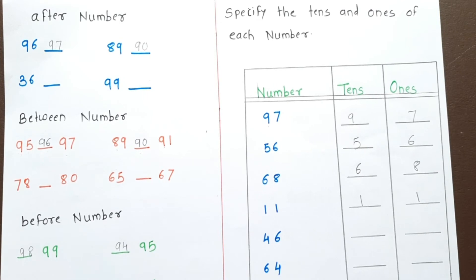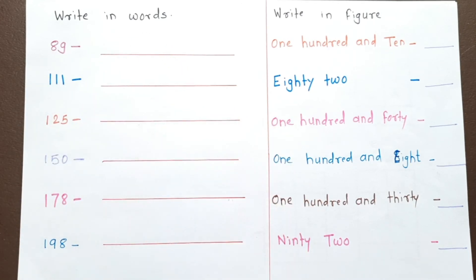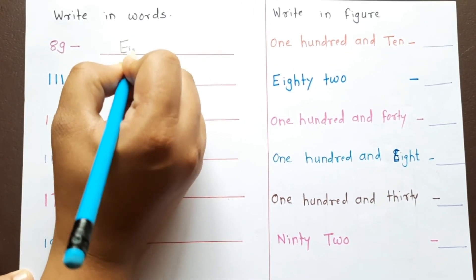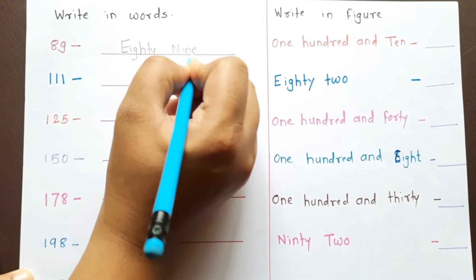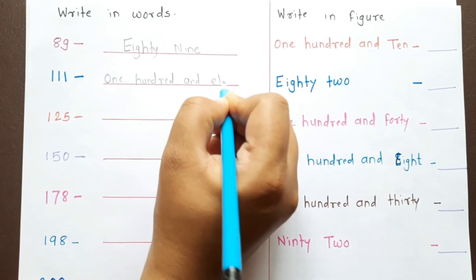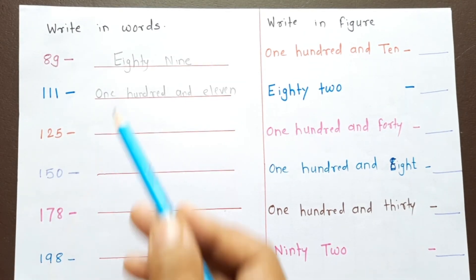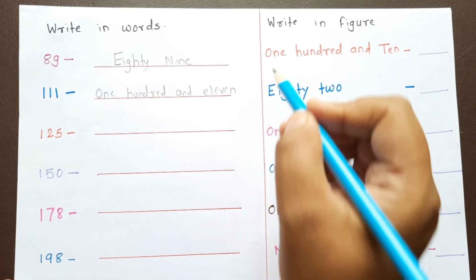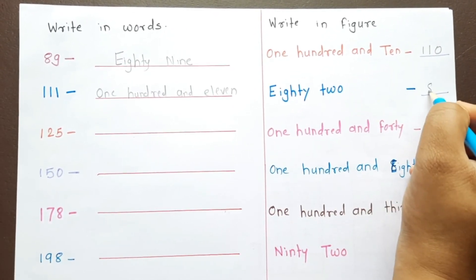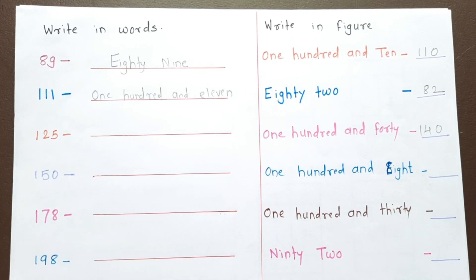Now we will write number names — that is, numbers in words. First: 89 — eighty-nine. Next: 111 — one hundred and eleven. 110 — one hundred and ten. 82 — eighty-two. 140 — one hundred and forty. 153 — one hundred and fifty-three.